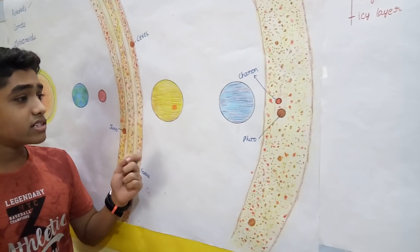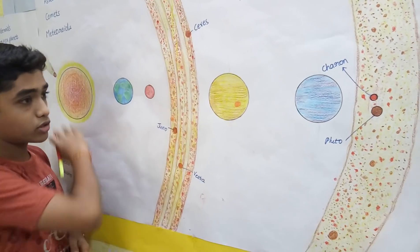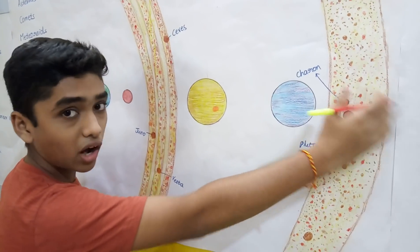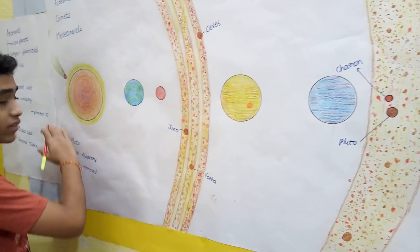These have very highly elliptical orbits. Sometimes they go far off after the Kuiper belt, sometimes they come very near to the sun.